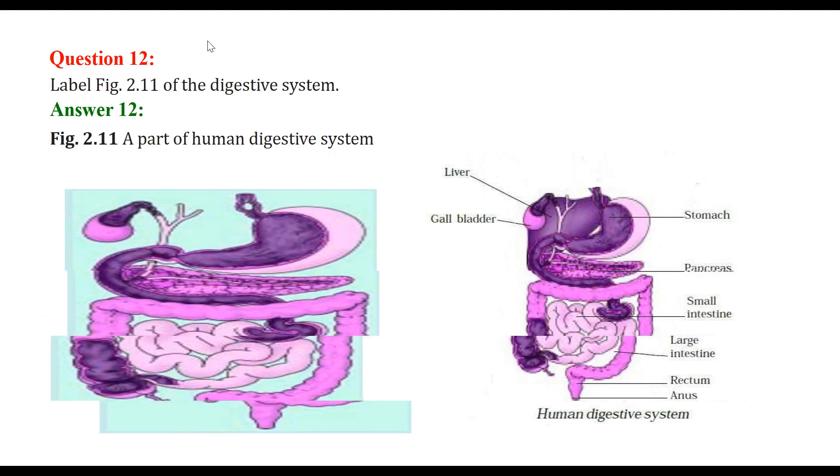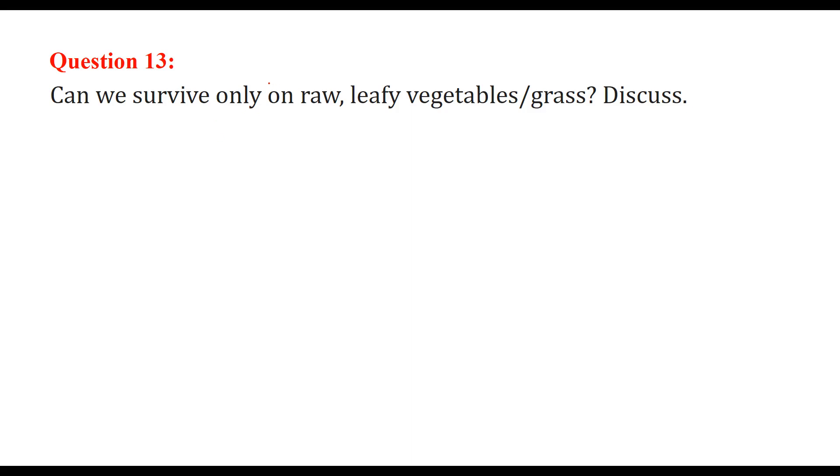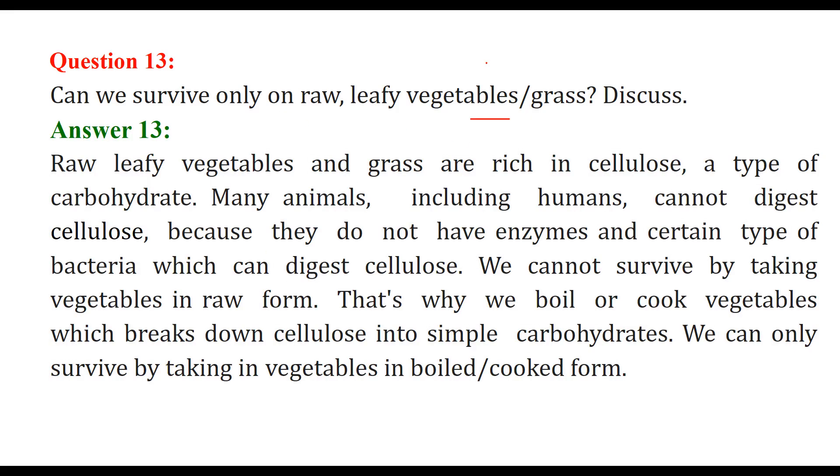Can we survive only on raw leafy vegetables or grass? Discuss. No, we cannot. We can live for some time but there is a problem. What? The leafy vegetables or grass, they are rich in cellulose. That is a type of carbohydrate. Various animals, including humans, cannot digest cellulose. We are not able to digest because we don't have that enzymes and those friendly bacteria that are going to digest cellulose for us.